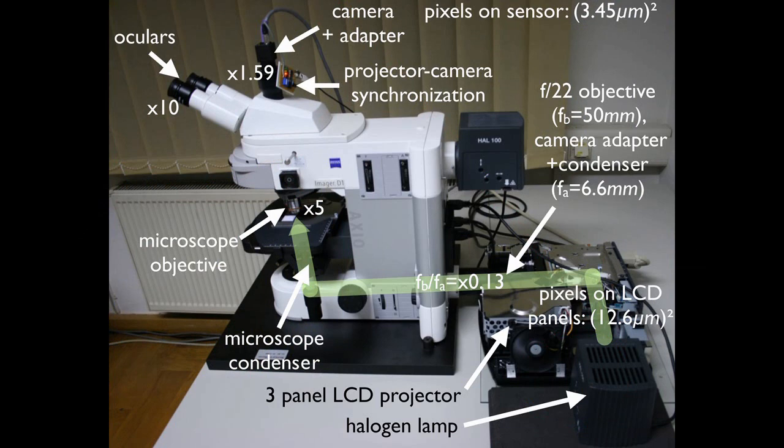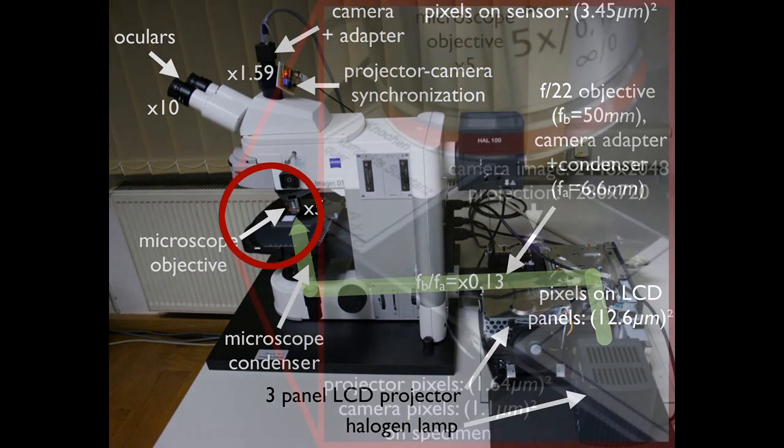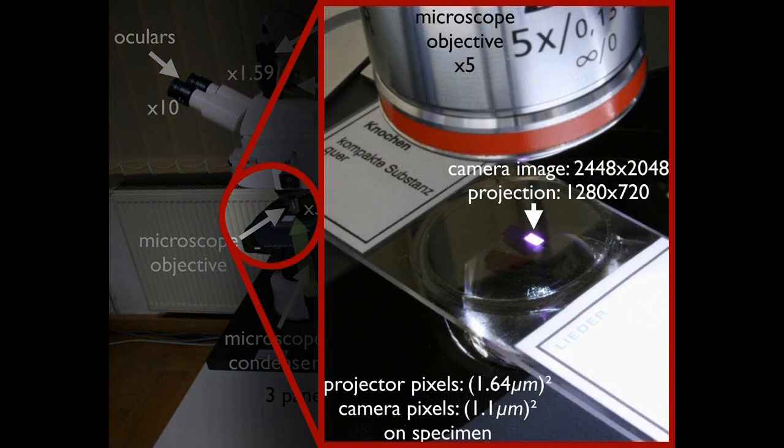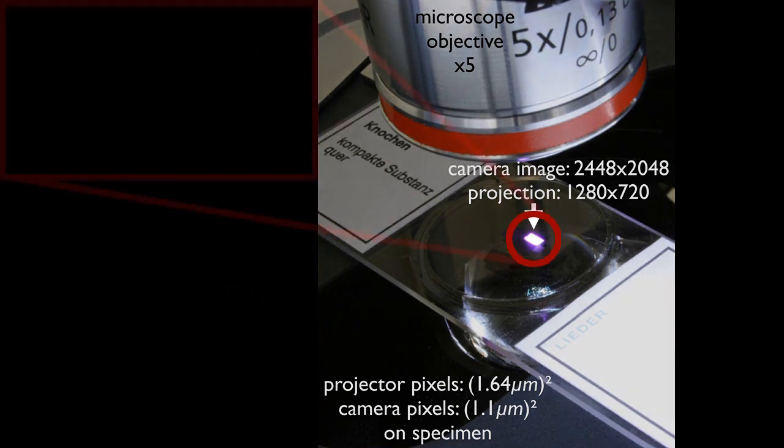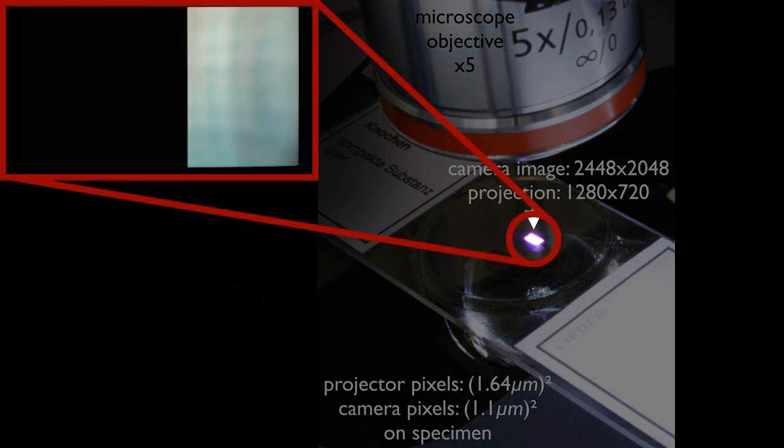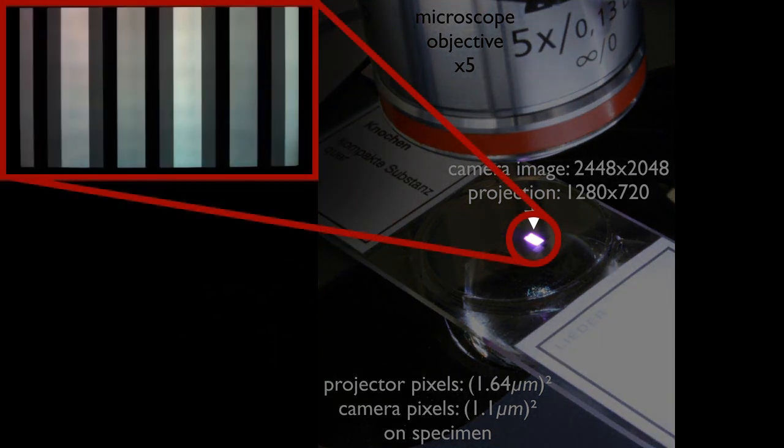For transmitted illumination, the projector is attached to the back illumination port of the microscope. Its image has to be focused separately through the condenser optics. The parameters for geometric projector camera registration and for flat field correction are measured using structured light.